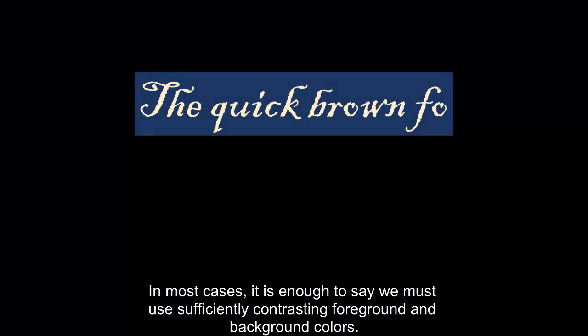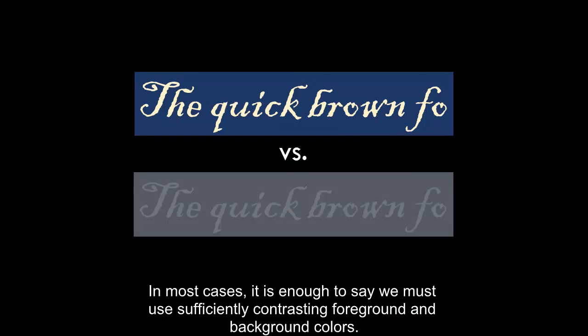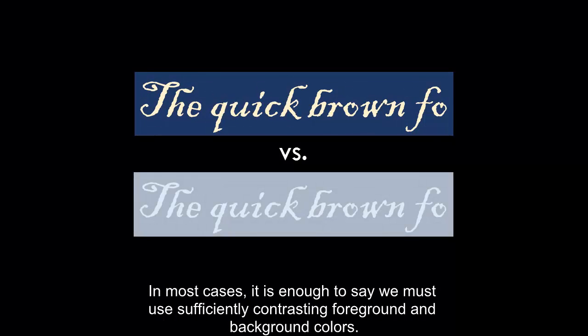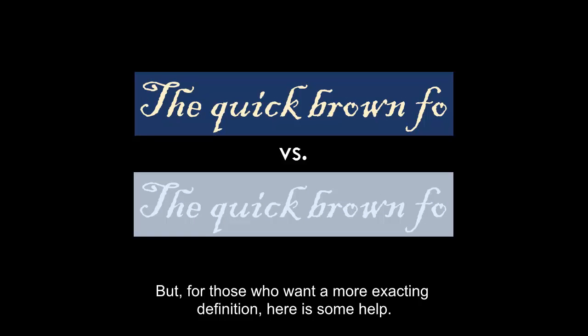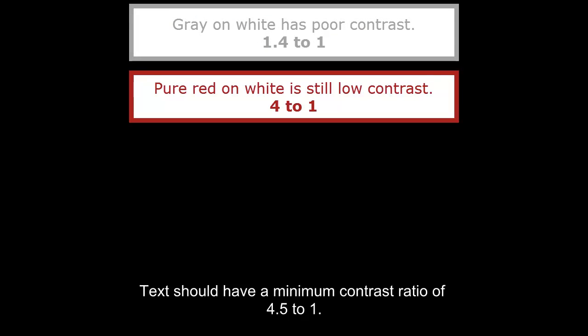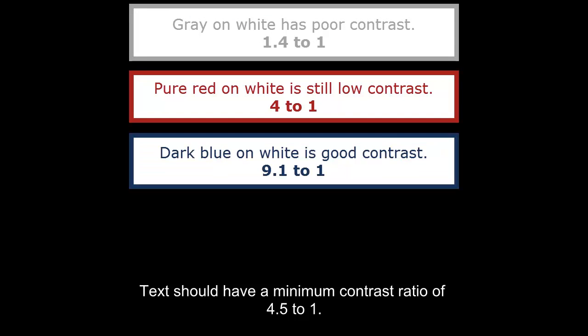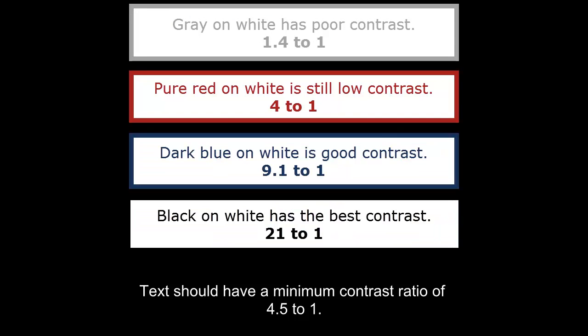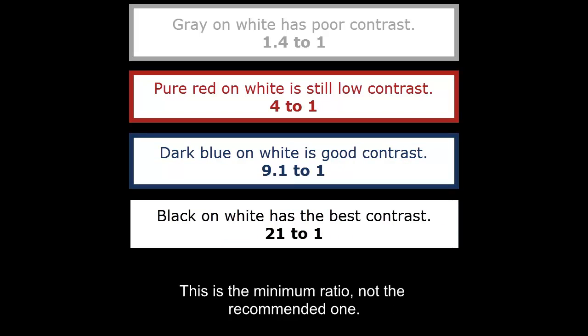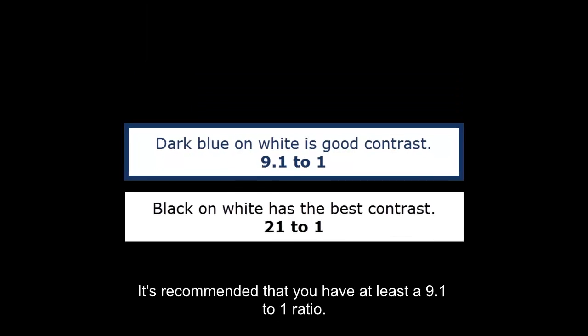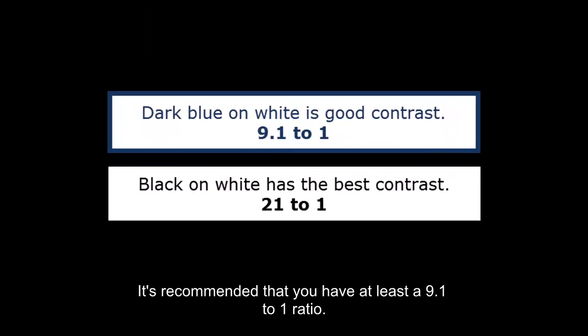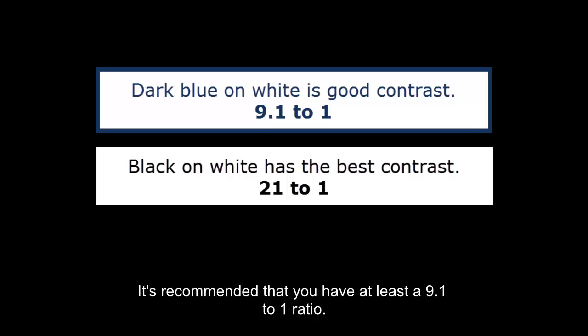In most cases, it is enough to say we must use sufficiently contrasting foreground and background colors. But for those who want a more exacting definition, here is some help. Text should have a minimum contrast ratio of 4.5 to 1. This is the minimum ratio, not the recommended one. It is recommended that you have at least a 9.1 to 1 ratio.